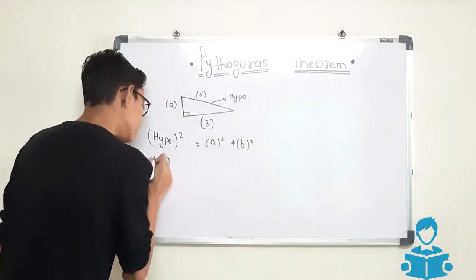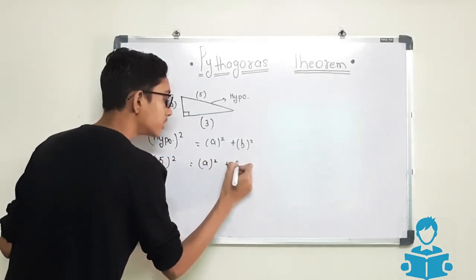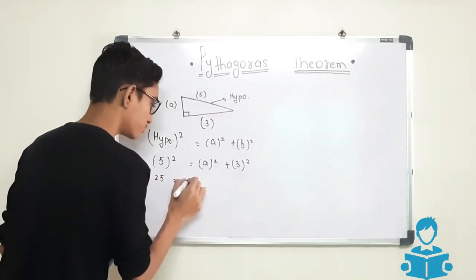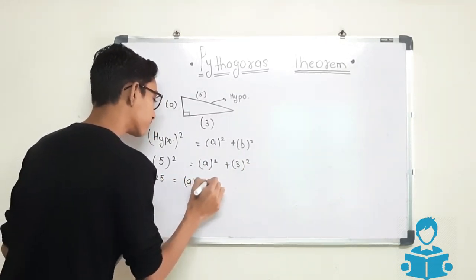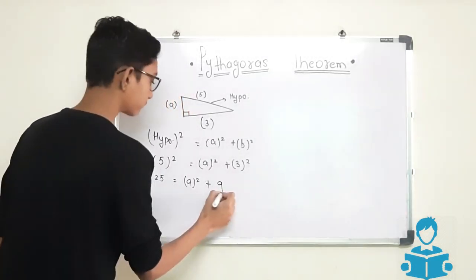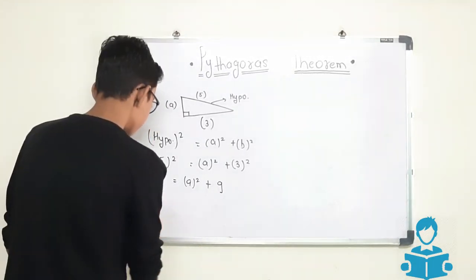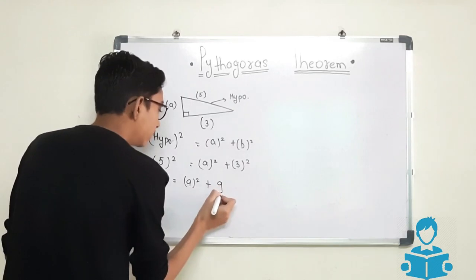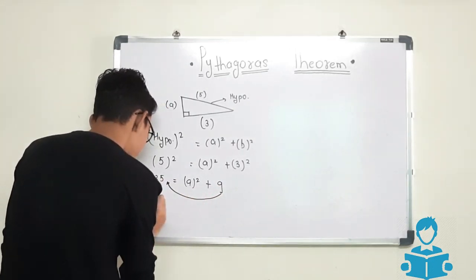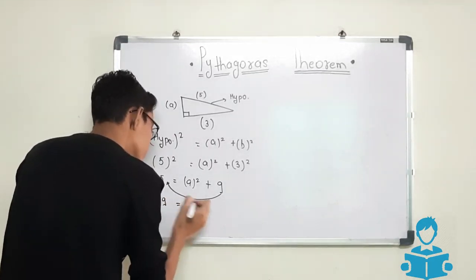Here, hypotenuse square, that is 5 square, is equals to A square plus 3 square. We will get 25 is equals to A square plus 9. We will simply take this 9 to the left hand side, that is 25 minus 9 is equals to A square.